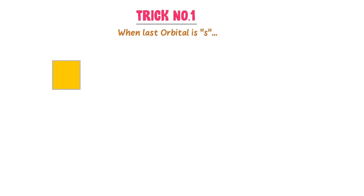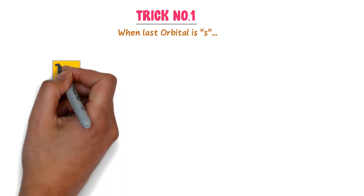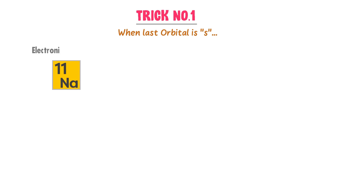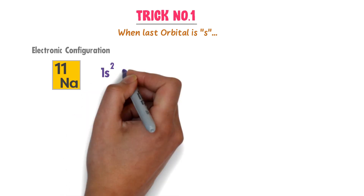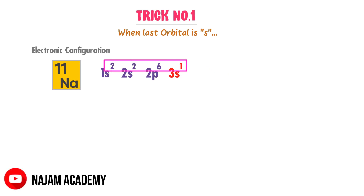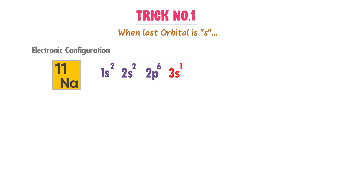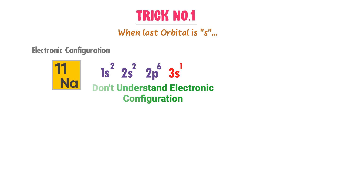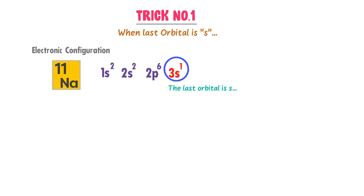For example, consider sodium. We know that its atomic number is 11. Its electronic configuration is 1s2, 2s2, 2p6 and 3s1. 2 plus 2 plus 6 plus 1 is equal to 11, so I have successfully configured the electrons of sodium. If you do not understand the trick of electronic configuration, watch our lecture — its link is given in the description. Now listen carefully: the last orbital is S, so the block of sodium is also S.